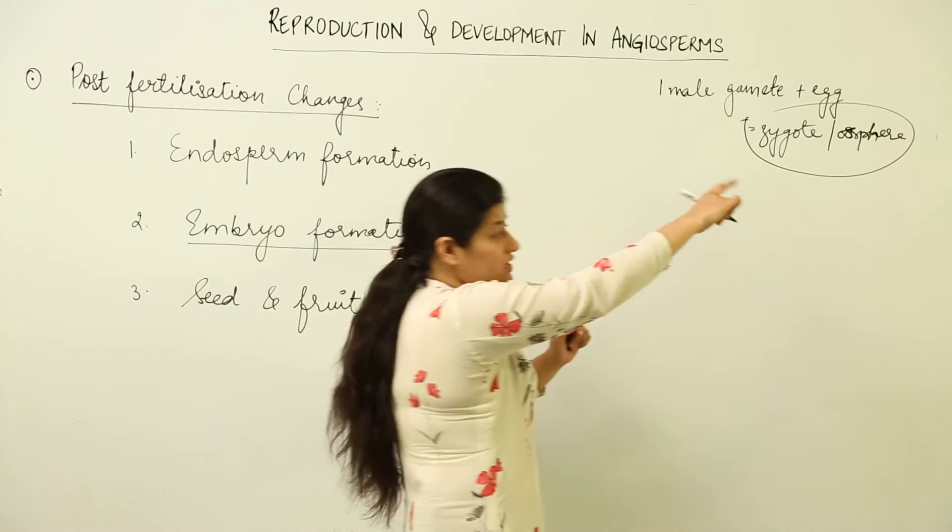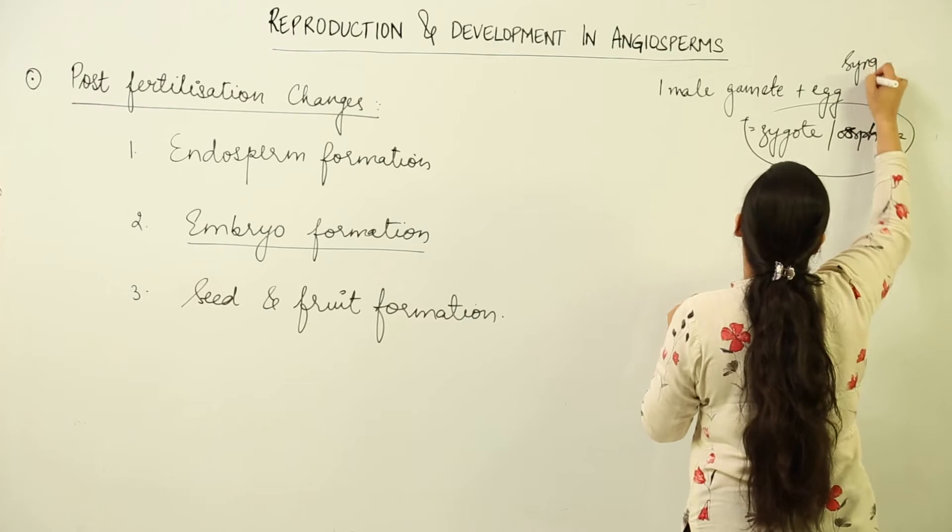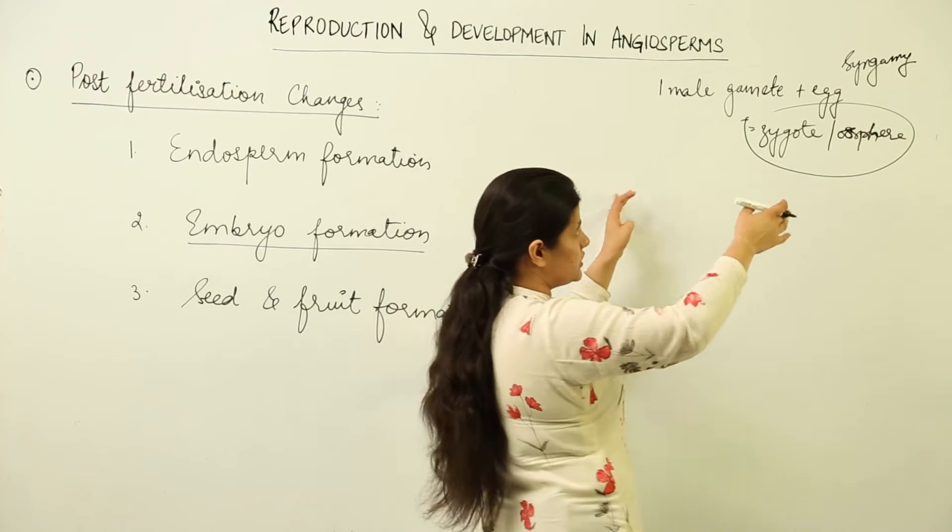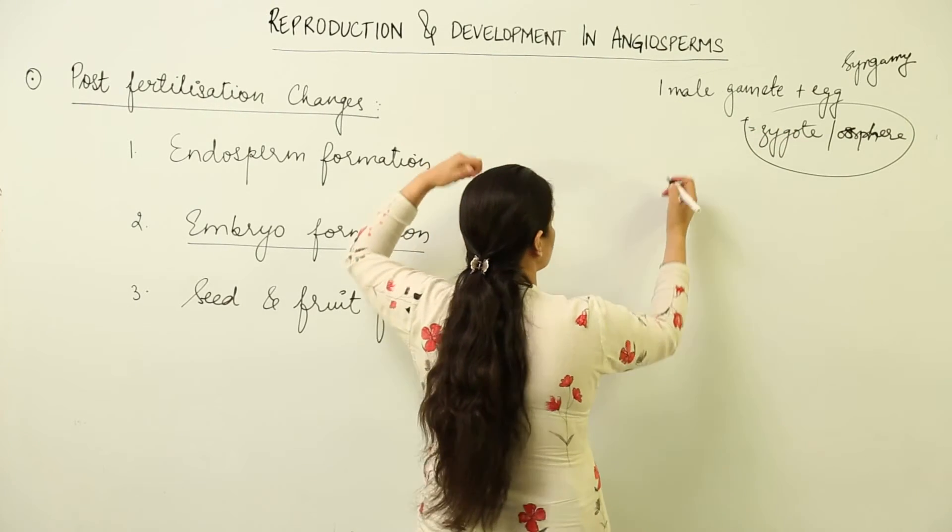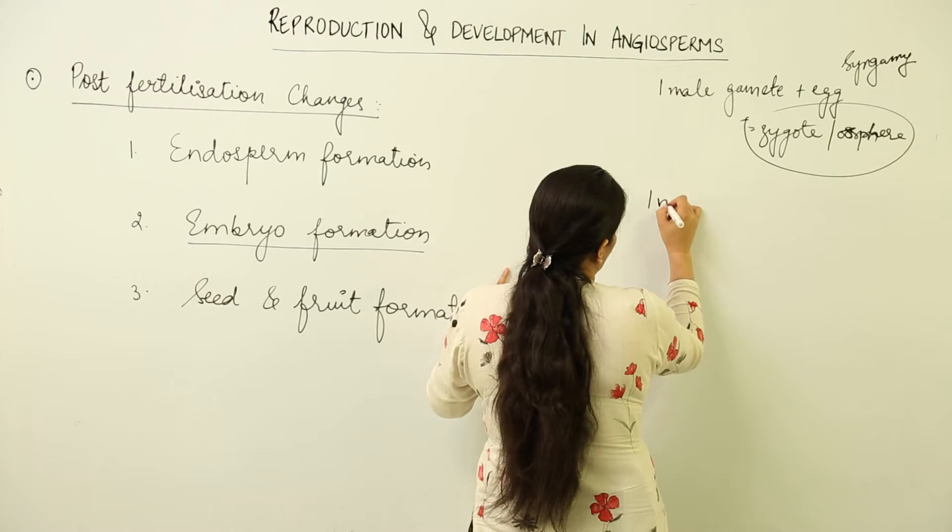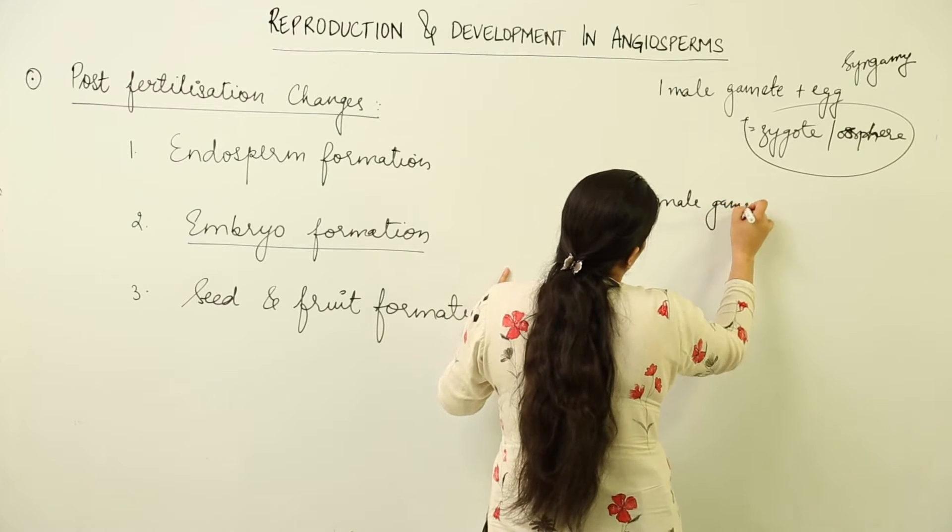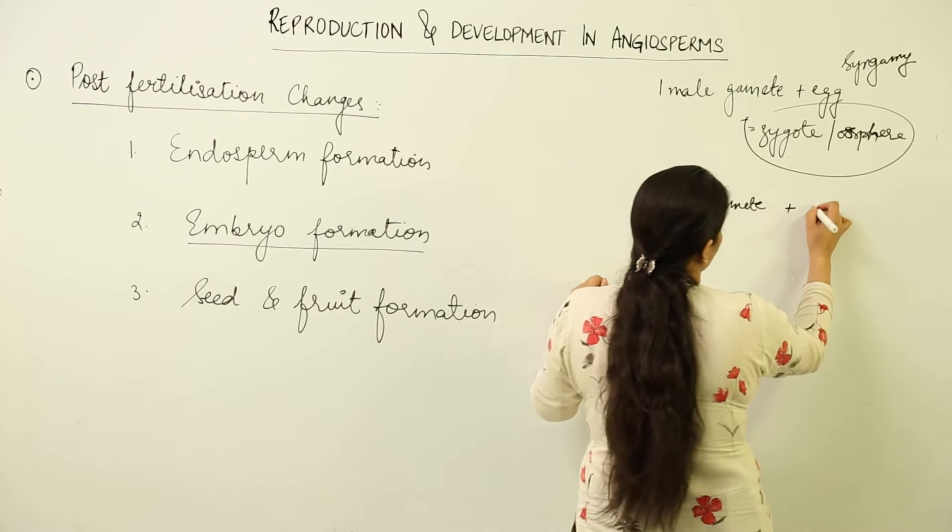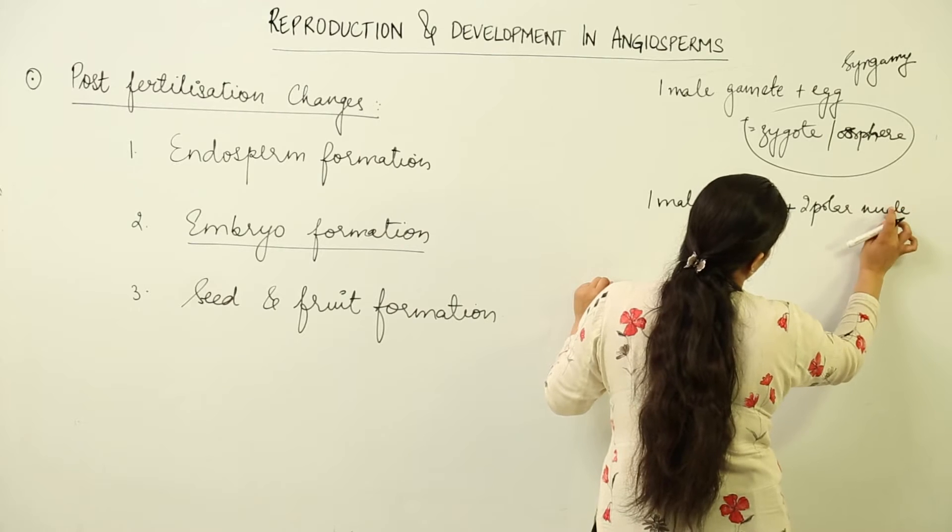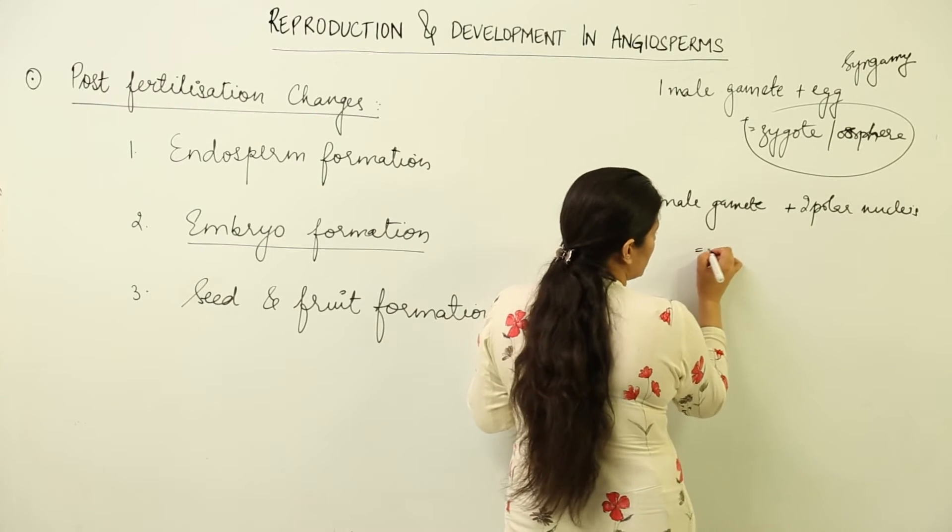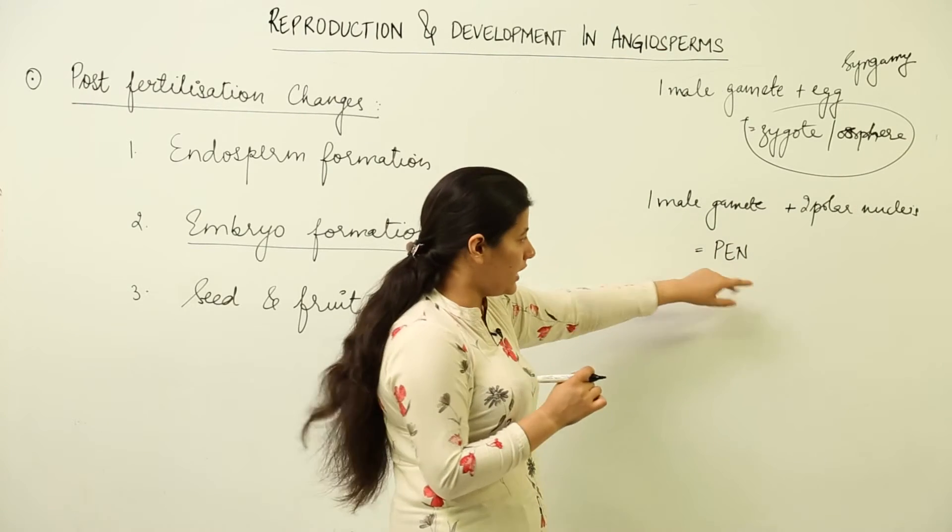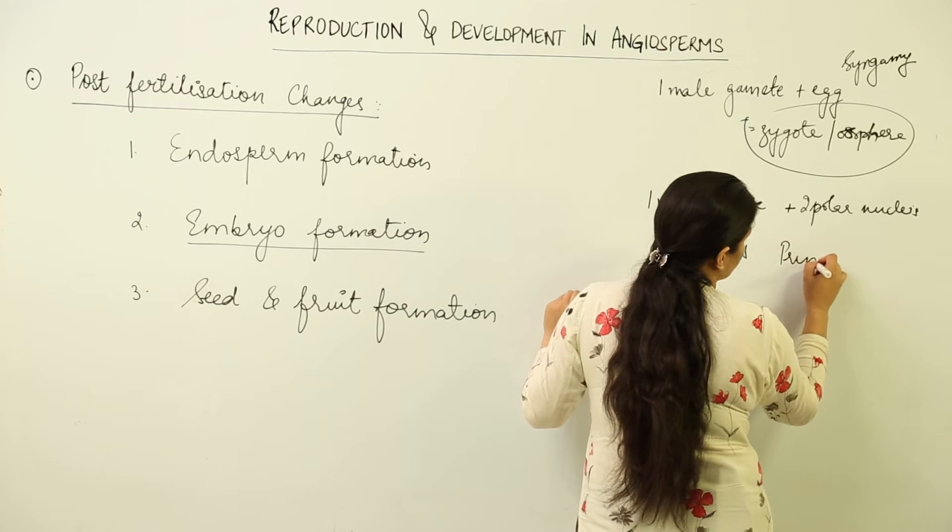This was the process of syngamy. It is repetitive, but just to understand why and how we study the post-fertilization stages, we're giving it a revision. Second is the other male gamete that combines in triple fusion with the two polar nuclei and forms primary endosperm nucleus, otherwise known as PEN, within the primary endosperm cell.